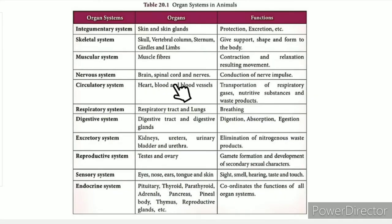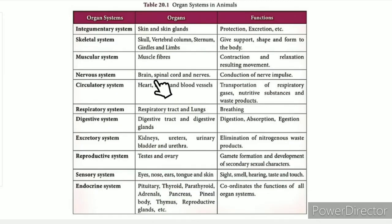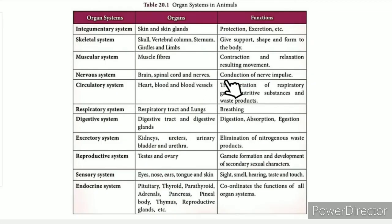The nervous system consists of the brain, spinal cord, and nerves. The impulse travels from the brain through the spinal cord and back to the brain. This is the conduction of nerve impulse.